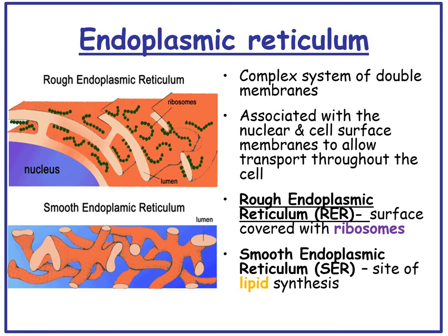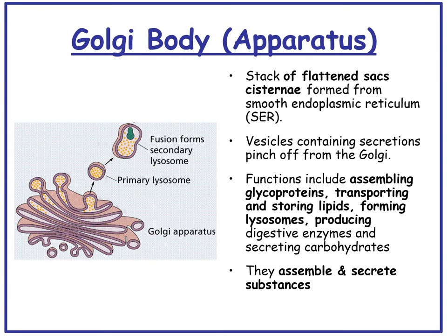The endoplasmic reticulum is a complex system of double membranes associated with the nuclear and cell surface membranes to allow transport through the cell. The rough endoplasmic reticulum (RER) has its surface covered with ribosomes, whereas the smooth endoplasmic reticulum (SER) is the site of lipid synthesis. The Golgi apparatus, also called the Golgi body, is a stack of flattened membranes called cisternae, formed from the SER. Vesicles containing secretions pinch off from the Golgi. Functions include assembling glycoproteins, transporting and storing lipids, forming lysosomes, producing digestive enzymes, and secreting carbohydrates.